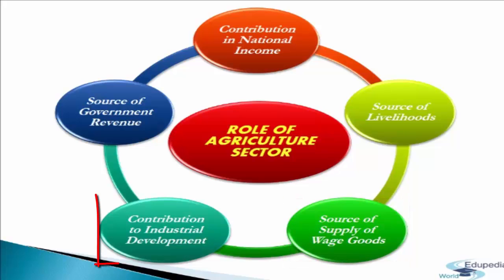Agriculture fulfills the country's food and fodder requirements, which are essential commodities for living. The fourth consideration is contribution to industrial development. Indian agriculture contributes to industrial development in two ways: first, by providing necessary raw materials to industries like cotton, sugar, edible oils, plantations such as tea and rubber, and agro-based cottage industries — about 50% of income in the manufacturing sector comes from these agro-based industries; and second, by purchasing goods produced by industries, as increased agricultural income may lead to expansion of the market for industrial products.